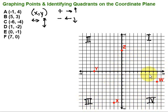The x-axis is the horizontal axis and the y-axis is the vertical axis. If we're asked to identify a quadrant and the point is on one of the axes, then it is not located in one of the quadrants.